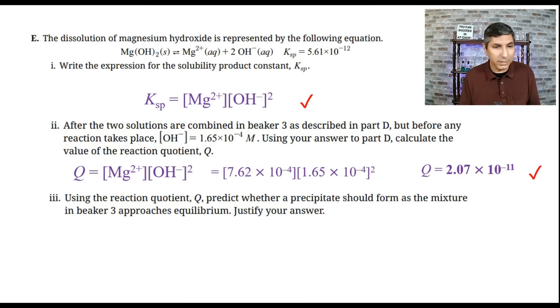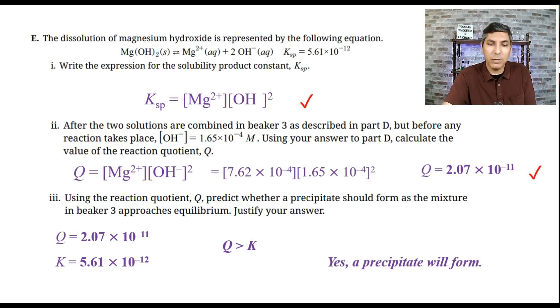Now, the next part, part three says using the reaction quotient, that's what we just calculated, predict whether a precipitate should form as the mixture in beaker three approaches equilibrium and justify your answer. Well, we have to compare Q versus K. So we just figured out what Q was, and K is given to us up here in the problem. It's 5.61 times 10 to the negative 12. So it sure looks like Q is greater than K. And so if Q is greater than K, then that means yes, we are going to have a precipitate form. So if you gave the correct judgment and answer there, give yourself a point for part E.